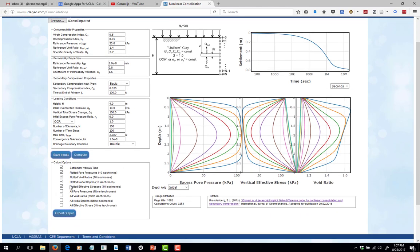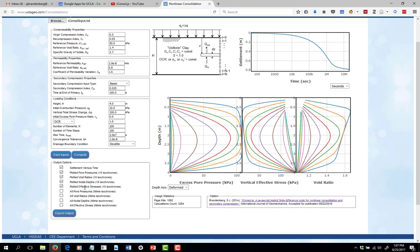Now you can export the output as well if you'd like to have the data stored in a text file format. The options available for output are settlement versus time, the plotted pore pressure isochrones, which means 10 of them. We're looking at 10 different isochrones here. You can do the plotted void ratios, the plotted nodal depths. So that will give you the depths corresponding to each isochrone. So you could reproduce the deformed plot if you want. And then it'll give you the plotted effective stresses. Just know that when it says plotted, it's only going to give you the 10 data points that are plotted here, but this is only a subset of the solution. We actually analyzed 100 time steps.